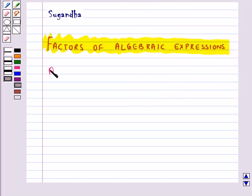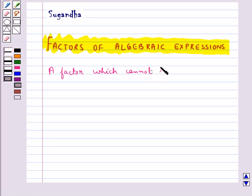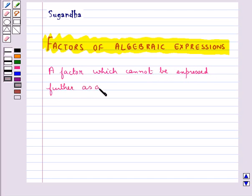An irreducible factor is a factor which cannot be expressed further as a product of factors.